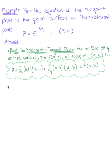So the first thing that we want to do is find that point P0 as the ordered triplet. So we want to define this as a, b, f of a, b. And we're given here the a and b values, we have that a is 3 and b is 0.